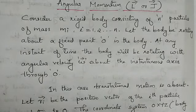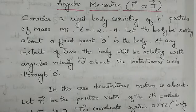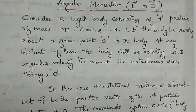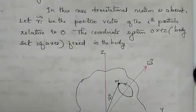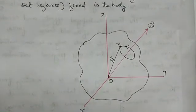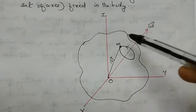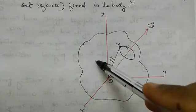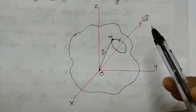Consider a rigid body consisting of n number of particles of mass m_i, with i equal to 1 up to n. Let the body be rotating about a fixed point O in the body. Consider this figure with X, Y, Z axes marked. This is a rigid body consisting of n number of particles.